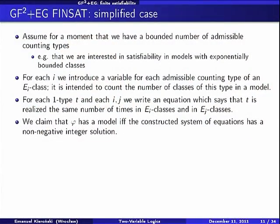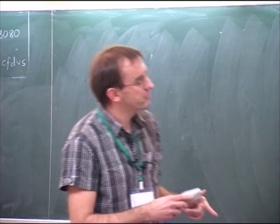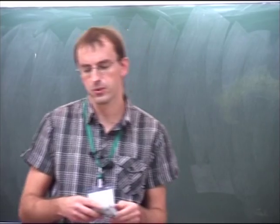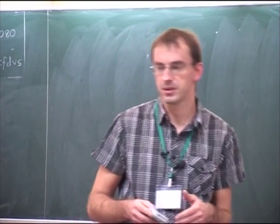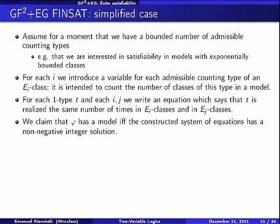For example, we may assume we are interested in satisfiability in models with exponentially bounded classes only. Then the number of counting types will be bounded doubly exponentially. If we have exponentially many possible elements, the values of counting type functions are also exponentially bounded, giving at most doubly exponentially many such classes. We construct a system of equations: for each admissible counting type for E_i, we introduce a variable. So we have unknowns for E1 classes, unknowns for E2 classes, and so on.